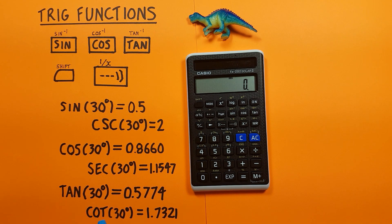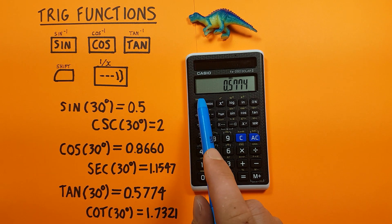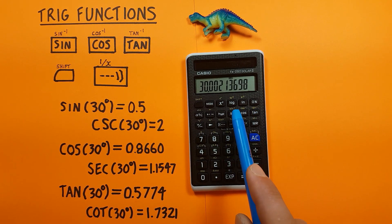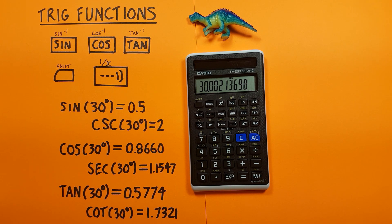And for arc tan, again enter the 0.5774, shift, tan. And again we have what would round to 30 degrees.